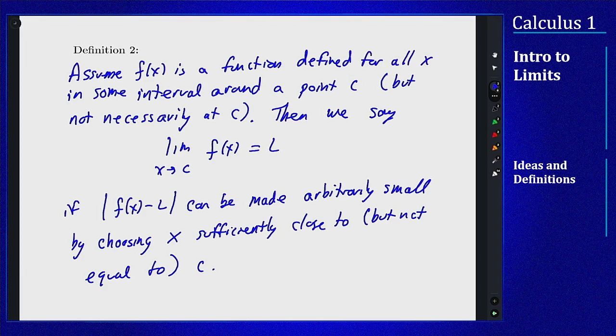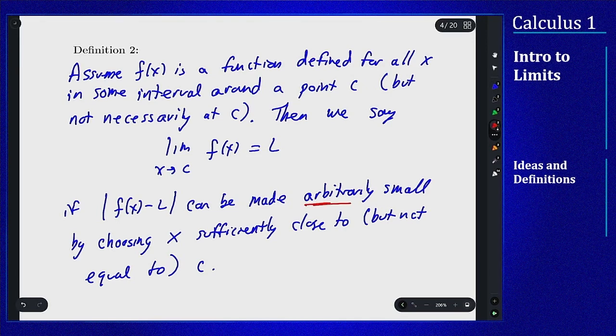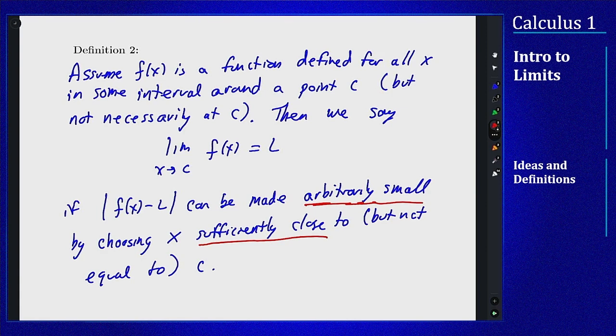Okay, that wording feels strange there but what it does is it fixes our previous problem. The weird wording here is in this arbitrarily small and sufficiently close bit. But all this means is that if you give me some threshold, you say I want you to put the value of f of x to be within 0.001 of L. If this limit exists and equals L, I can then go back and say I can do that and you have to pick x within 0.0001 of c and then it works. So it's sort of a back and forth game here. You pick any threshold for how far you are away from L and then I will come back and tell you here's how close you have to be to c to make that work. Now why does this fix our problem?